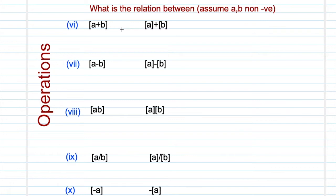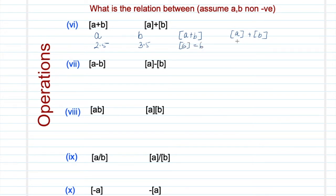Let's start looking at the relationship by taking some values. Let's create a matrix. Take a = 2.5 and b = 3.5, so a + b = 6, and ⌊6⌋ = 6. Then ⌊a⌋ = 2 plus ⌊b⌋ = 3, which equals 5. As you can see, ⌊a+b⌋ is actually greater than ⌊a⌋ + ⌊b⌋ in this case. Let's take another example — keep a the same and change b a little bit.